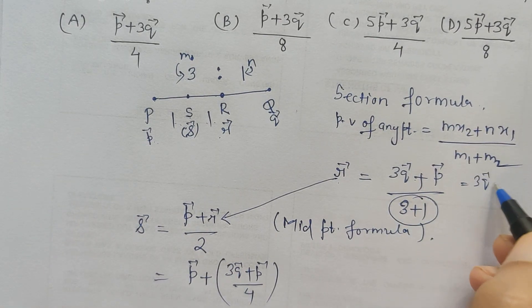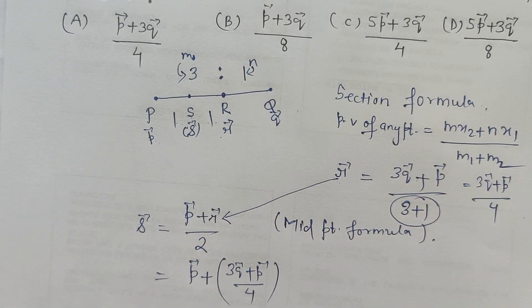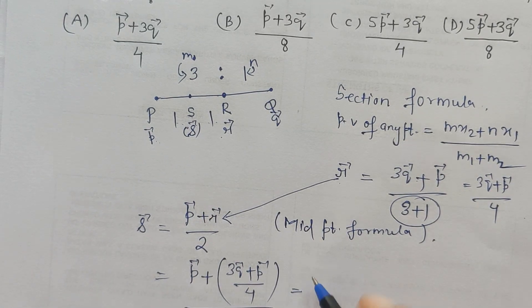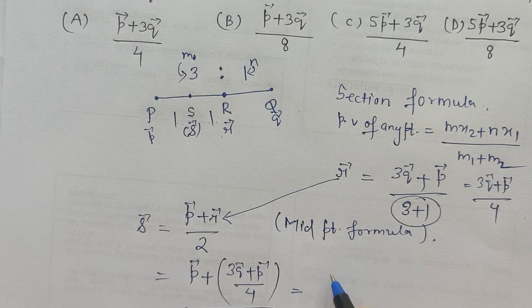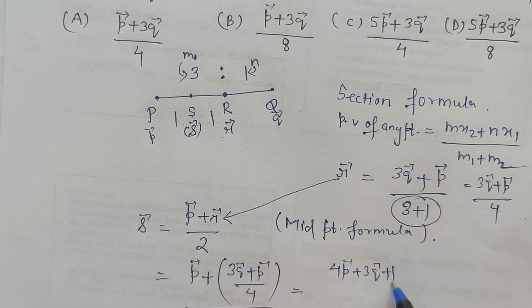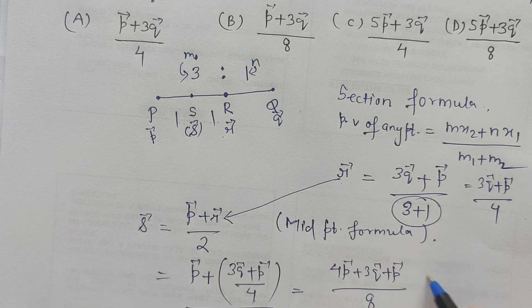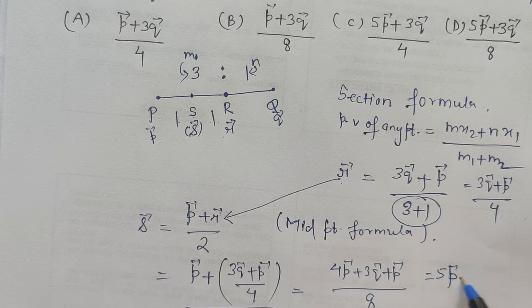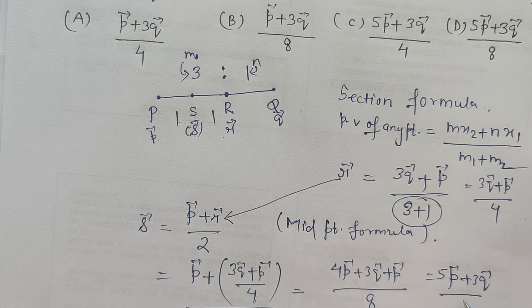So here I can rewrite 3Q vector plus P vector upon 4 upon 2. Now let us find the LCM and get the exact solution. So it is 4P vector plus 3Q vector plus P vector upon 4 into 2 is 8, which gives us 5P vector plus 3Q vector upon 8.